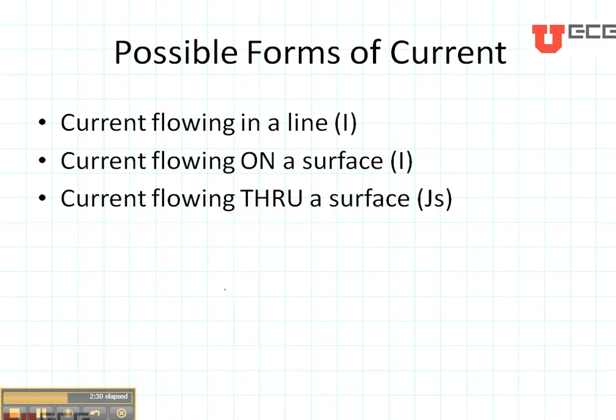There are three possible forms of current that we're interested in. One is just a straight line current, something like I is 7 amps in the Z direction. Another one is current flowing on a surface, such as on the inner conductor of a coax. Since we know that the coax is metal, whether it is hollow or not, the current is going to be flowing all on the outside, and it's going to be uniformly distributed. So again, we can just say that I is 7 amps, and it's flowing in the Z direction on the outside of the cylinder.